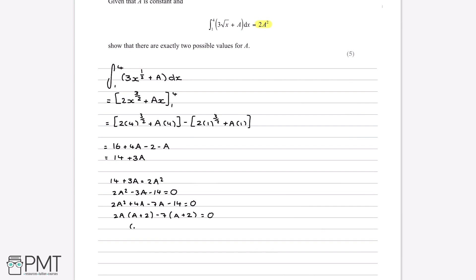So now we keep the a plus 2. And in the other bracket, we use the things outside of each bracket. So 2a minus 7 as our second bracket. And this is still equal to 0.